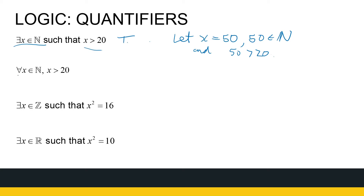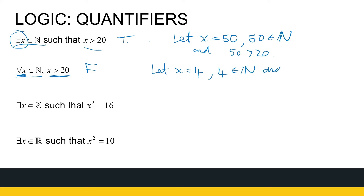Next one: for all natural numbers, they're greater than 20. There's a big difference between these two statements. The first one was 'there exists,' and now I've got a 'for all.' Are all natural numbers greater than 20? Definitely not. I need to find one that's not. Let x be equal to 4. 4 is a natural number, and 4 is not greater than 20 — it's less than 20. So that's why I can say it's false.